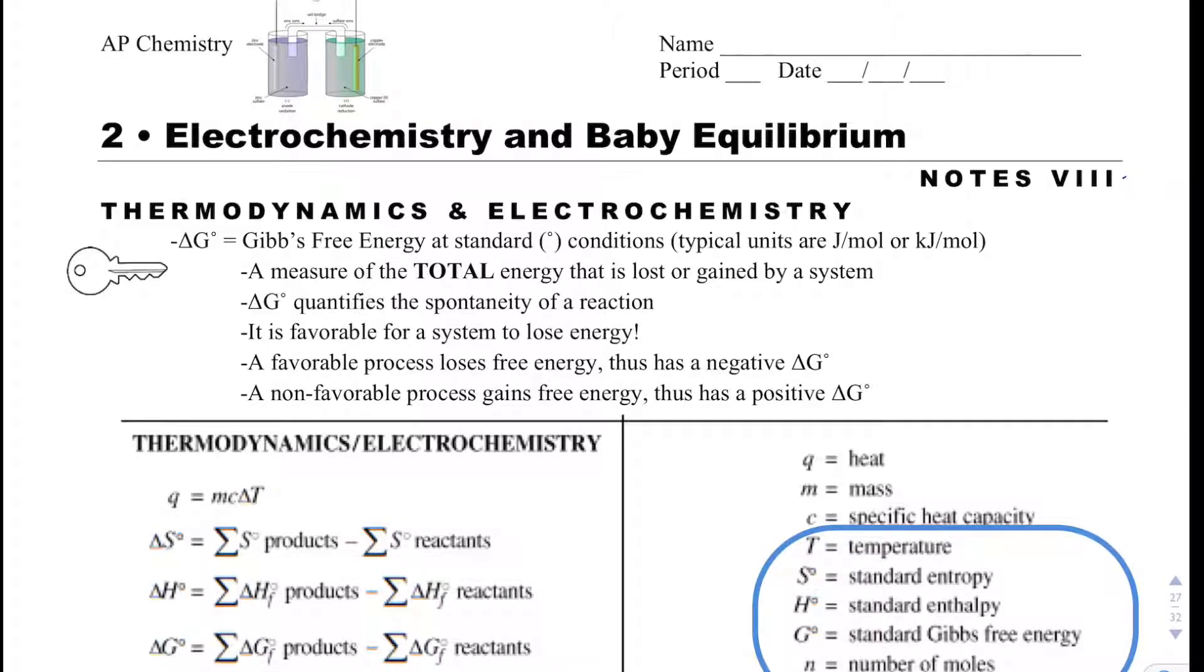Some important things we need to make sure we know is that delta G is called Gibbs free energy at standard conditions, and it's a measure of the total energy that is gained or lost by a system.